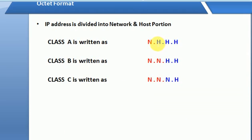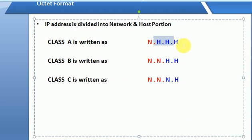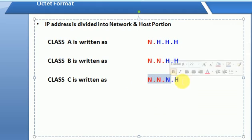In Class A, there is a network ID portion and a host address portion. In Class B, there is one network ID and one host address portion. Class B has a network ID and a host ID. We will go into more detail on this in the next tutorial.